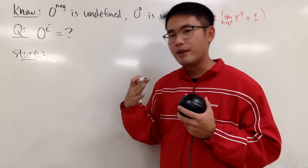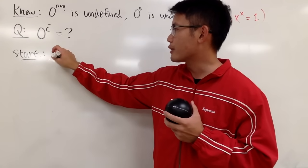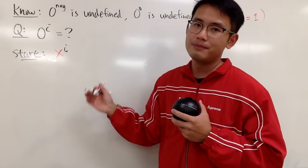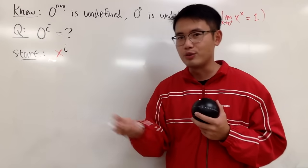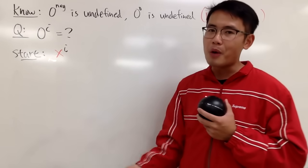I need to have a real number for the base, and I will just call that to be x, and then I will raise that to the i's power, and of course, later on, I will just plug in 0 for x, and that will be 0 to the i's power.